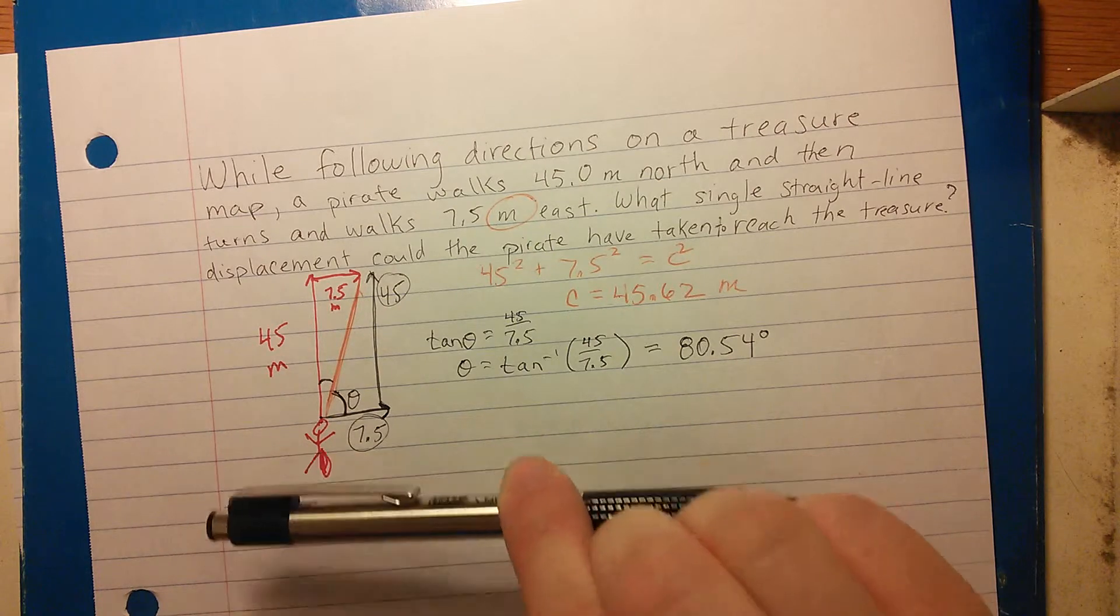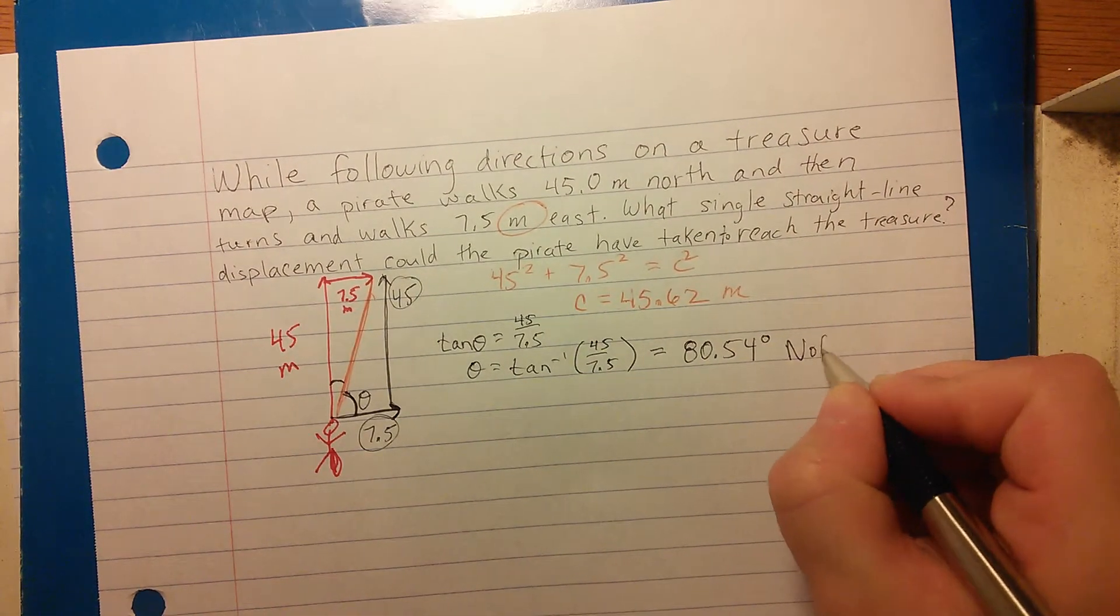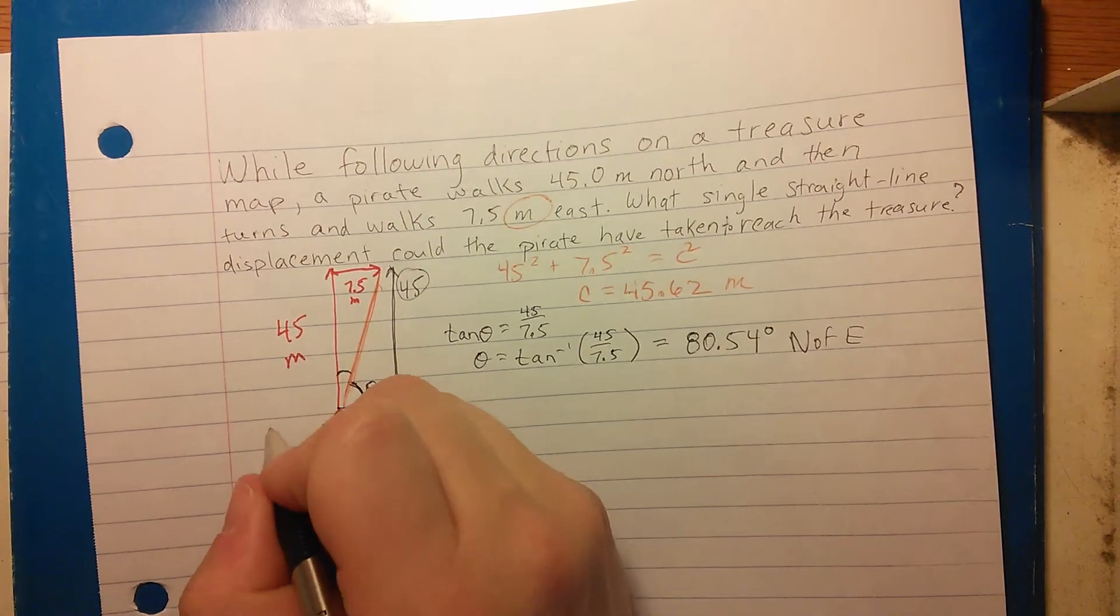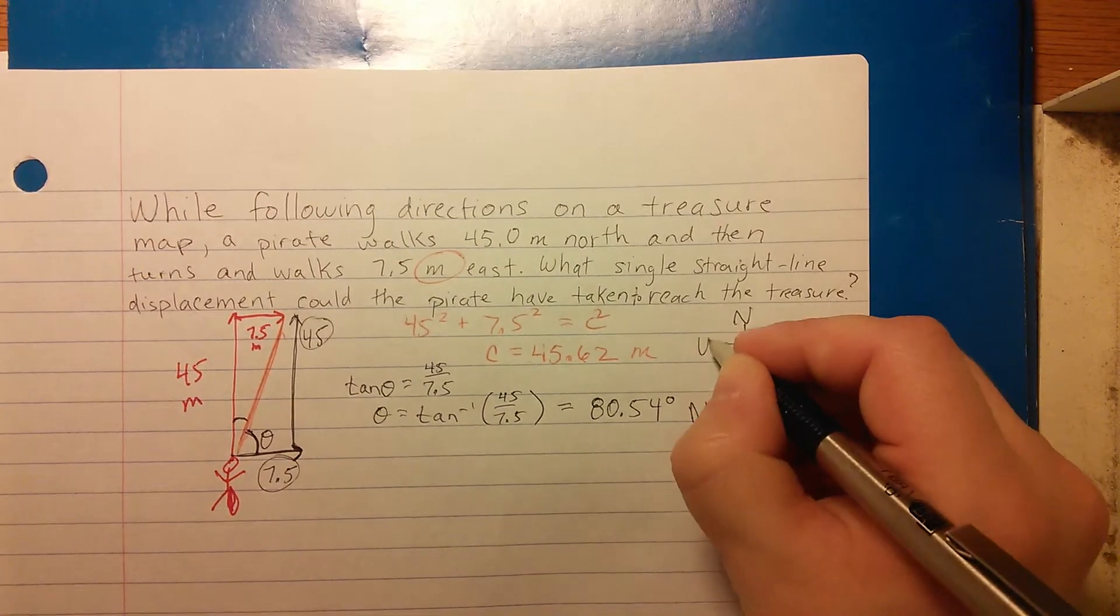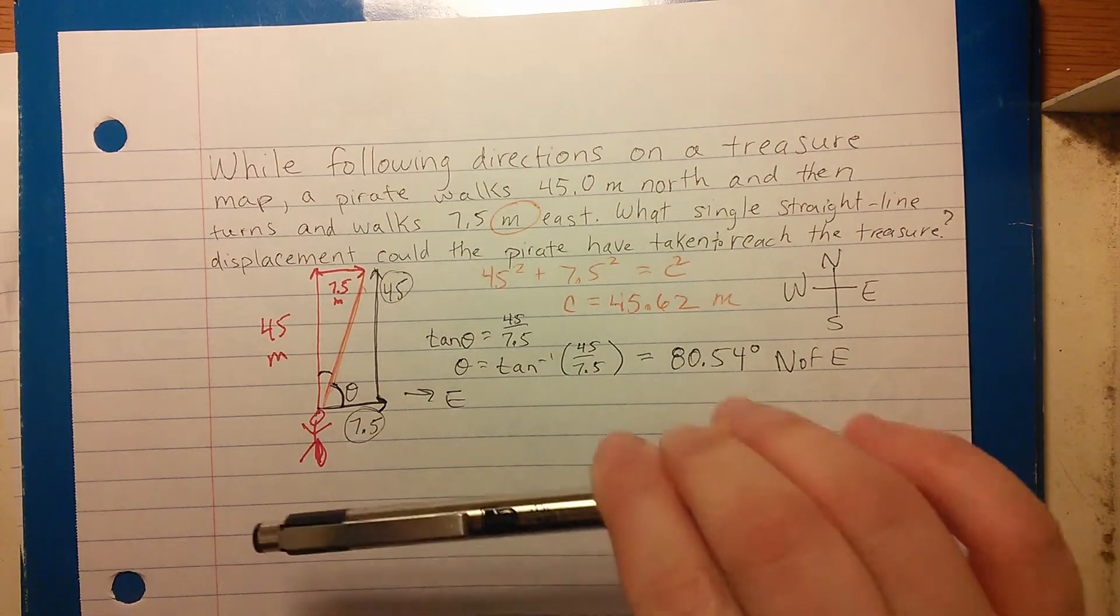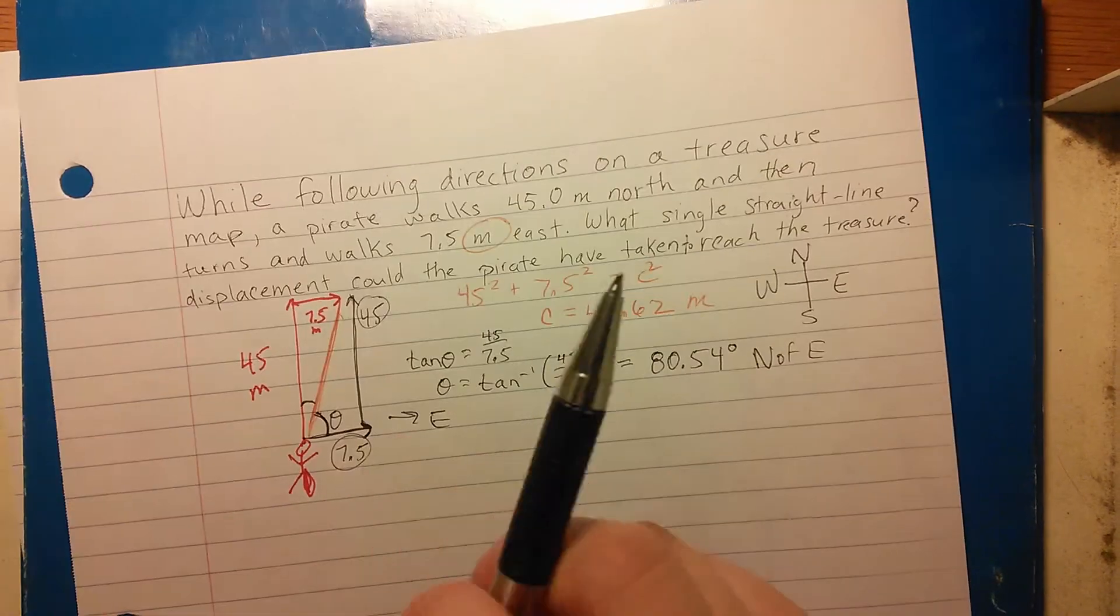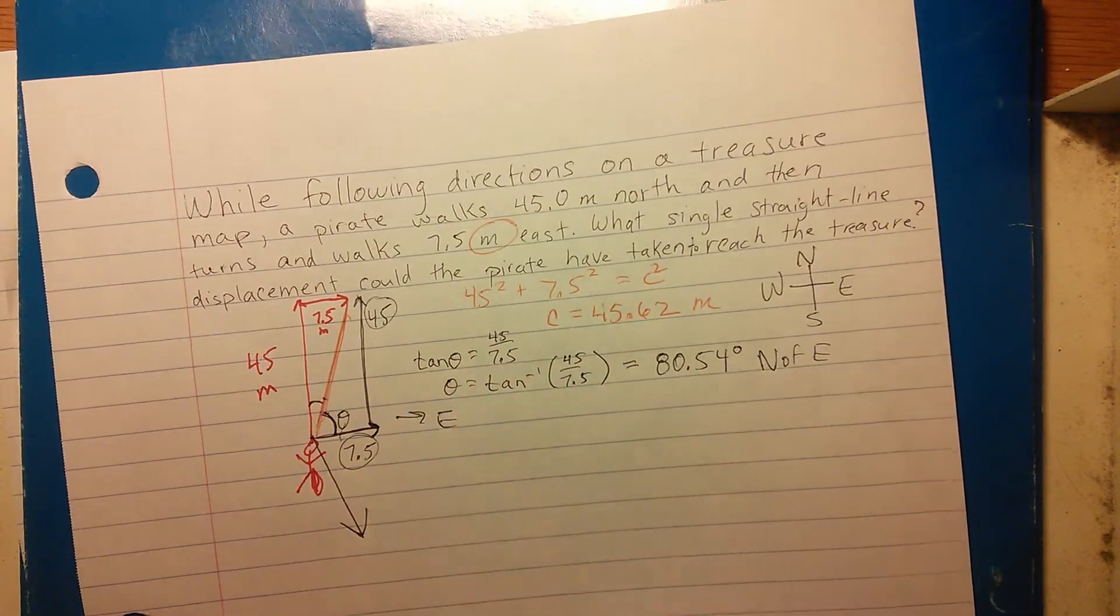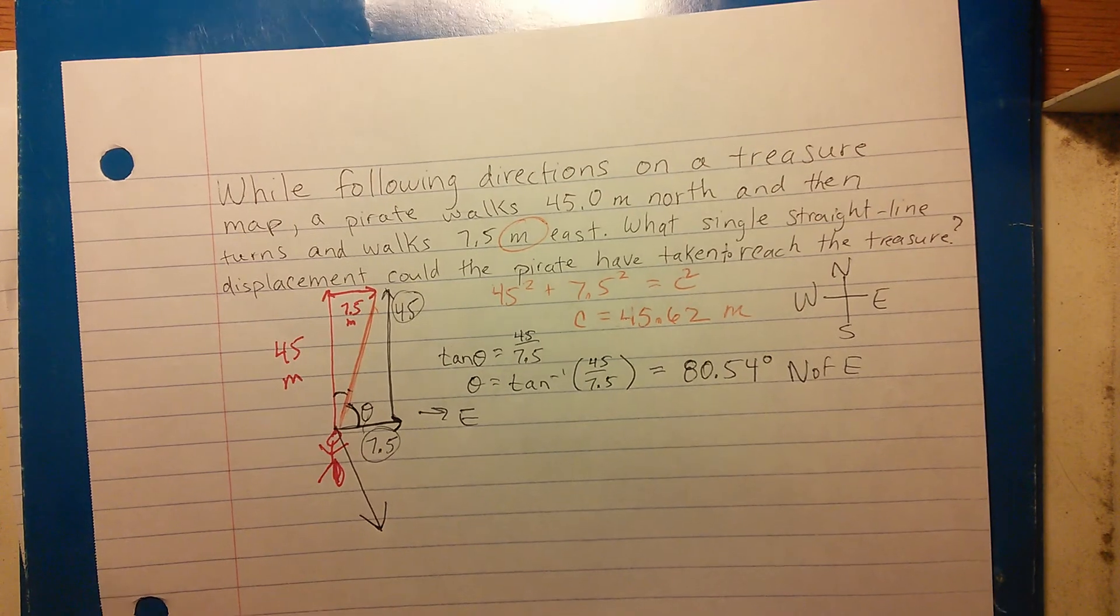Again, we need to add some direction words here. What you should write is that the pirate went 80.54 degrees north of east. The reason we say it that way is—let's draw a little compass real quick: north, south, east, west. This line right here is the eastern line, so we're making east our reference. The pirate went this angle north of east. Now if he'd gone that direction, we would have said south of east. We'll be doing more problems like that so you can get used to the direction words. Nice job, guys!